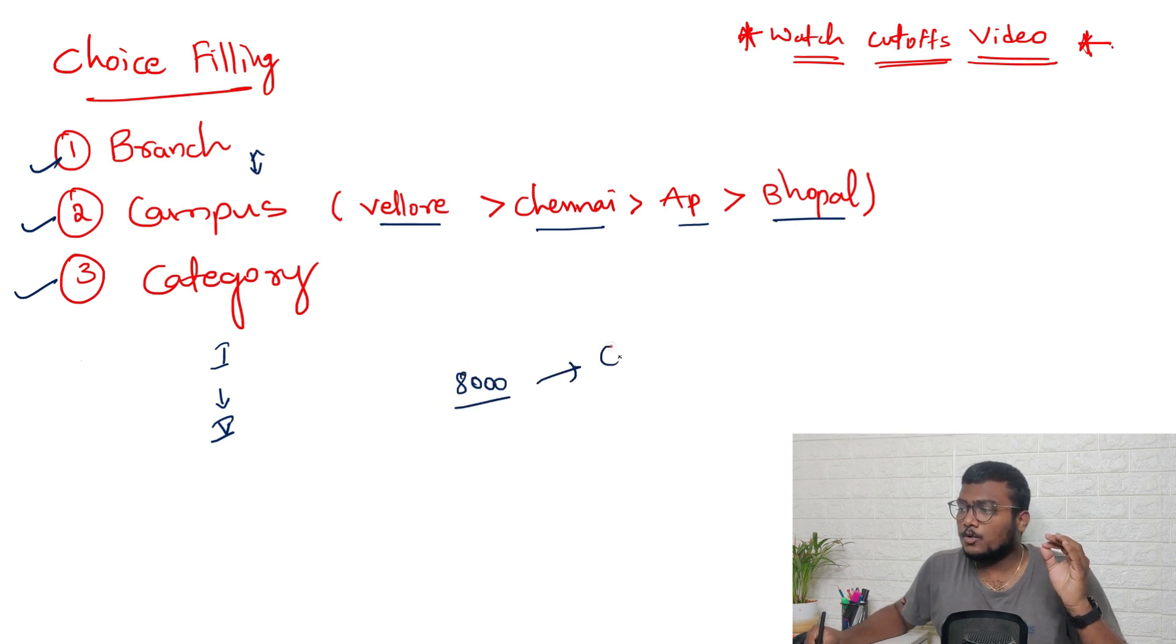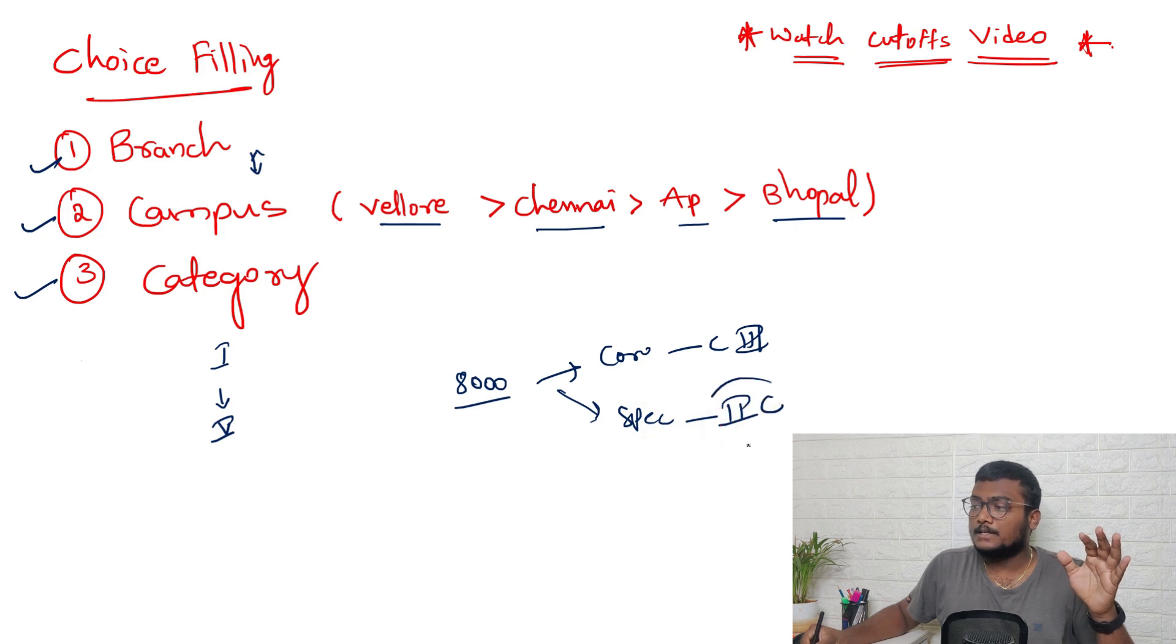For example, there's a person who got rank 8,000. He will be getting core category 3, but there will be some specializations in CSE where he may get category 2. In this case he can save a lot of money.